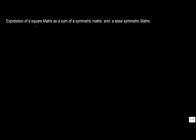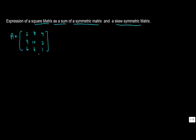Let's see the second theorem for a square matrix: the expression of a square matrix as a sum of a symmetric matrix and a skew-symmetric matrix. We know that for any square matrix, a symmetric matrix can be written as A plus A-transpose, and a skew-symmetric matrix can be written as A minus A-transpose.